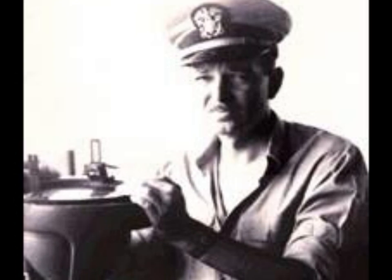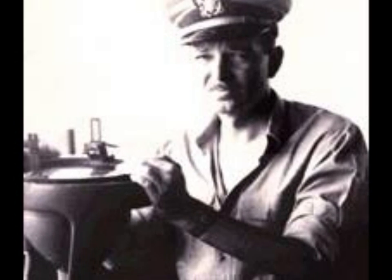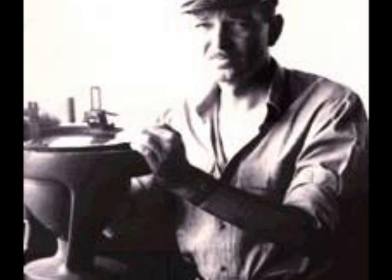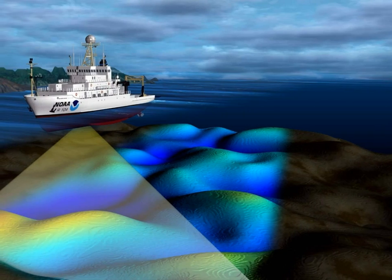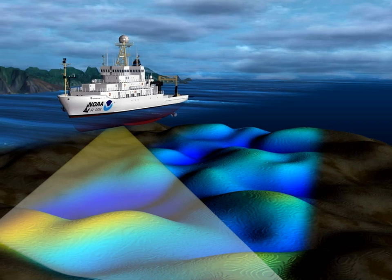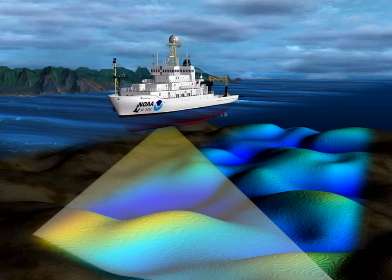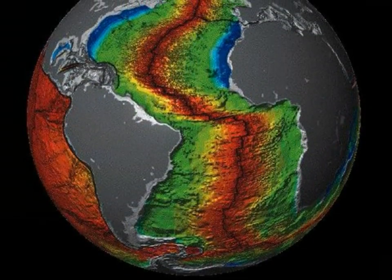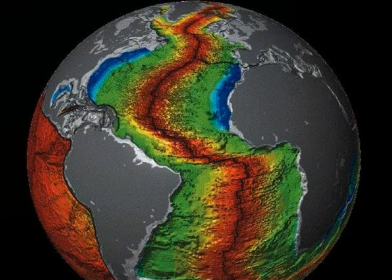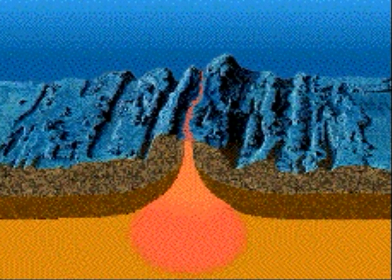1959. Harry Hess publishes History of the Ocean's Basins, presenting evidence of seafloor spreading. While sailing the earth's oceans during World War II, Hess maps the ocean floor using sonar. His maps show a huge mountain chain spanning the length of the Atlantic Ocean. Hess takes core samples and discovers that the ocean floor gets older the farther he gets from the ridge. Hess argues that new ocean floor is being created at the ridge, pushing the continents of North and South America away from Africa and Europe.